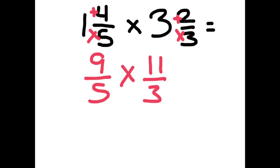Now we finish by multiplying the numerator. So 9 times 11 is 99 out of 15.